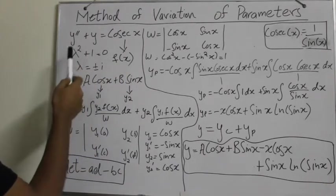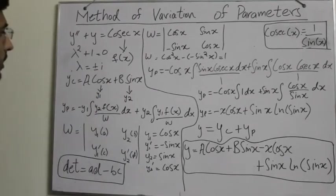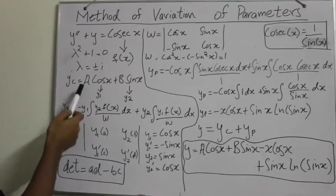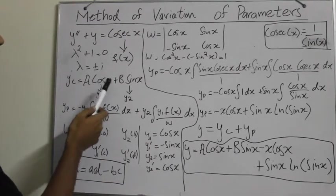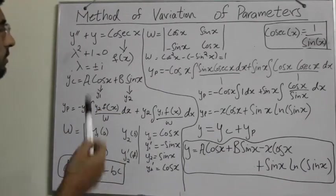Now to find out roots, lambda squared plus 1 equals 0, and the roots come out to be plus minus iota. As the roots are imaginary, yc comes out to be a cos x plus b sin x, or c1 cos x plus c2 sin x, whatever suits you.